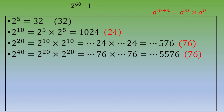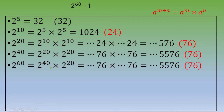Last step: calculate 2 power 60. This is 2 power 40 times 2 power 20 — a number ending in 76 (just calculated) times another number ending in 76 (calculated previously). The result is a number ending in 76. So 76 are the last two digits of 2 power 60.